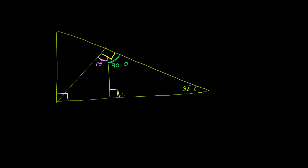Now we have three angles in the triangle, and we just have to solve for theta, because we know this angle plus this angle plus this angle are going to be equal to 180 degrees. So you have 90 minus theta, plus 90 degrees, plus 32 degrees is going to be equal to 180 degrees. The sum of the measures of the angles inside a triangle add up to 180 degrees.